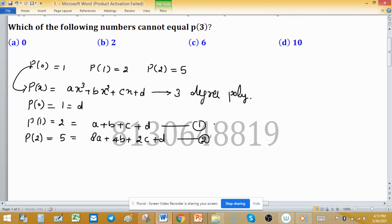Now both equations contain D and we have the value of D as 1. So from this equation A + B + C is 1 and from equation 2, 8A + 4B + 2C is 4. This equation has 2 as a common factor, so divide this equation by 2, so 4A + 2B + C is 2.